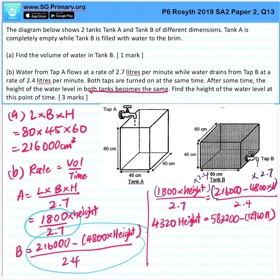When we put the height terms together, we get 4320 plus 12960, which is 17280 height, equals 583200. When we divide, the height will be 33.75 cm. This is our answer.